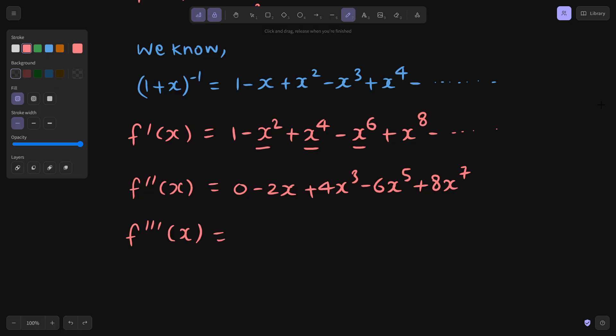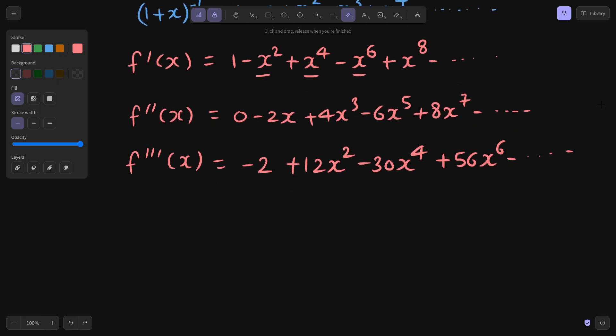This term is going to vanish further. Let's find the triple derivative. So again, it will become -2 and plus 12x² - 30x⁴ and plus 56x⁶ and so on. Let's find the fourth and the final one. So fourth derivative is -2 derivative is again 0, 12x² will be 24x - 120x³.